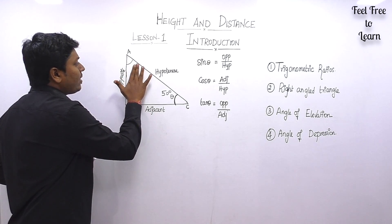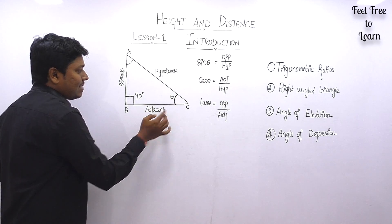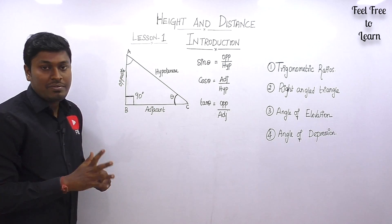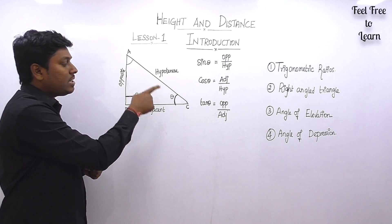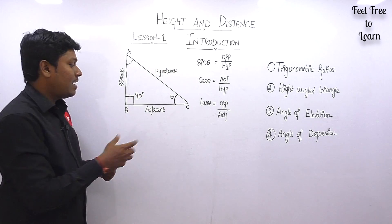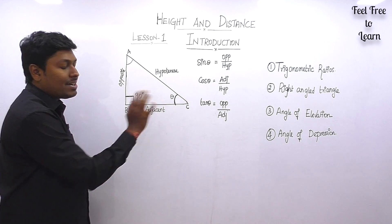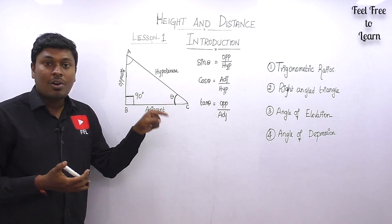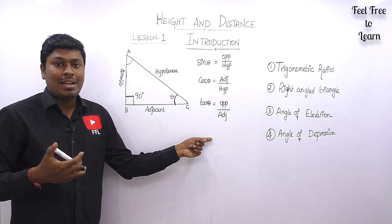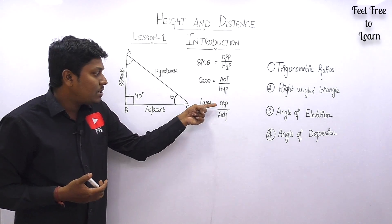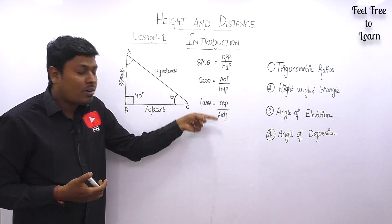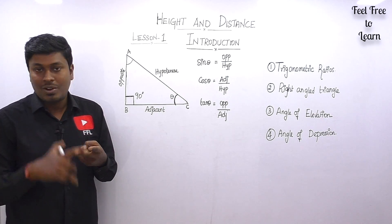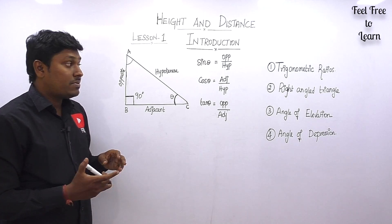You need to learn the three formulas: what is adjacent, hypotenuse, and opposite — also called base and perpendicular. Sin θ = opposite/hypotenuse, cos θ = adjacent/hypotenuse, and tan θ = opposite/adjacent. For cot θ, it's just the reciprocal of tan θ, so you only need to learn sin, cos, and tan.